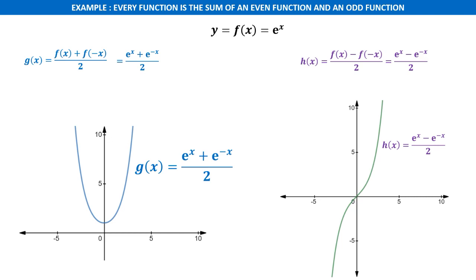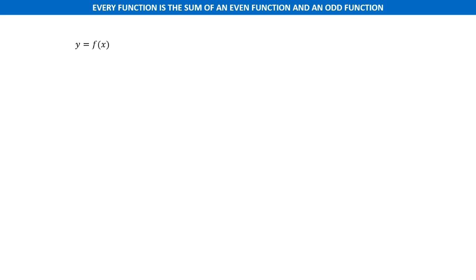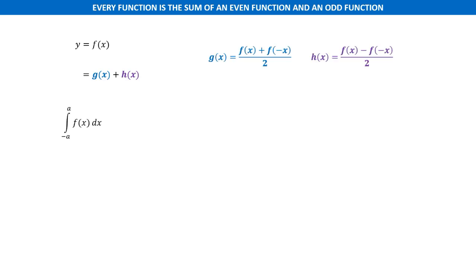At this point you have fully understood the method of splitting a function into even and odd components. Let us now express this idea in mathematical form. Let f(x) be a function equal to the sum of its even and odd components g(x) and h(x), and we want to find its integral with lower limit −a and upper limit +a, where a is greater than 0.